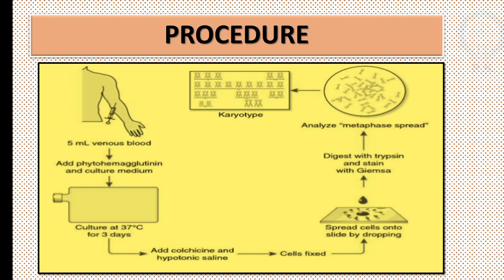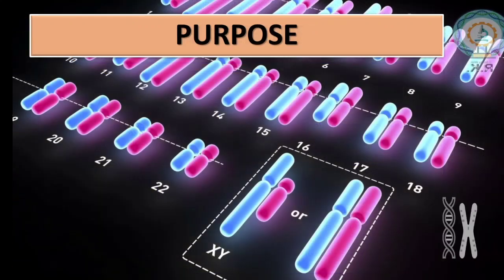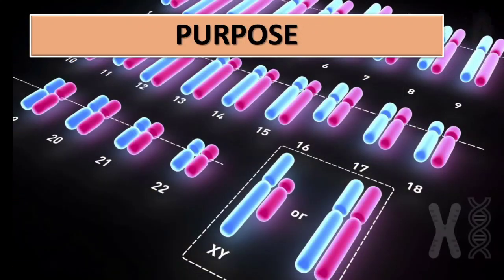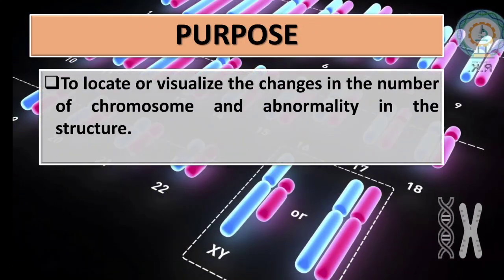Analyze the metaphase spread, photograph it, and cut out the photographs of individual chromosomes. Arrange them in descending order and in homologous pairs — this creates a complete karyotype. The main purpose of karyotyping is to locate or visualize changes in the number of chromosomes.